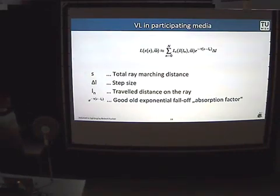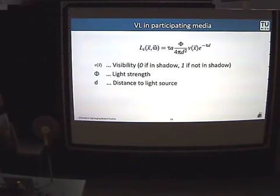The delta L is the step size. It's basically how much does this ray move forward per ray marching step. And then there is the Ln—Ln is the traveled distance on the ray. It basically says how much have we got or gotten already. And then this is the exponential fall-off, which I was talking about previously—it's the absorption factor.